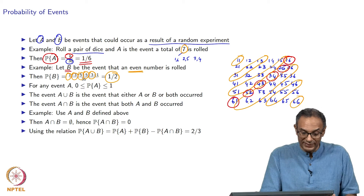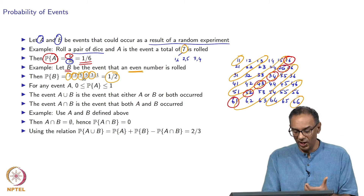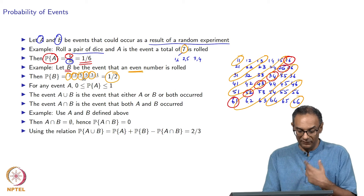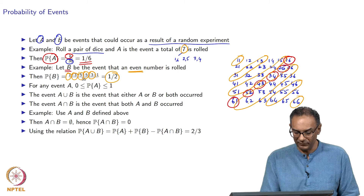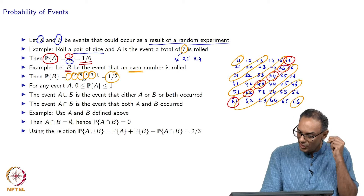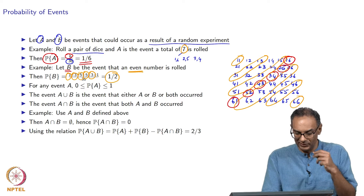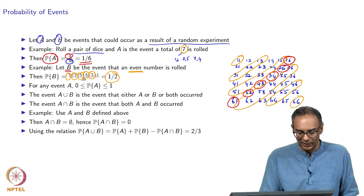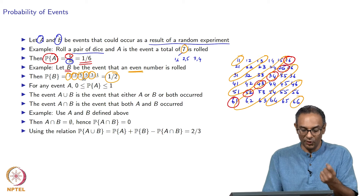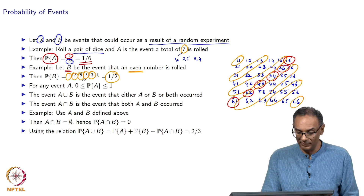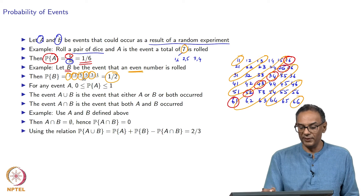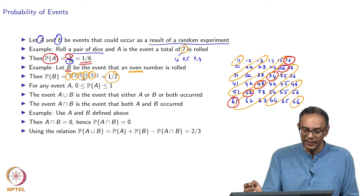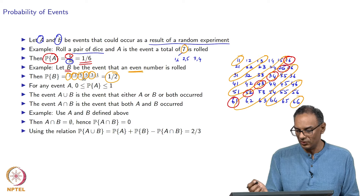18 divided by 36 is one-half. This should not be surprising because you could either get an even number or an odd number, both being equally likely. However, note that the probabilities of the various totals are not the same — for example, the largest probability is the probability of rolling a 7, which is 1/6, while the probability of rolling a 6 or an 8 is 5 over 36.